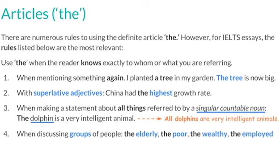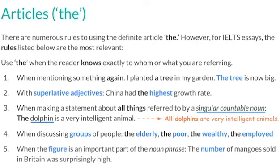We also use 'the' when we're talking about certain groups of people — for example, the elderly, the poor, the wealthy, the employed, and so on. Finally, we use 'the' if the figure is an important part of a noun phrase. For example: 'The number of mangoes sold in Britain was surprisingly high.' In this case, 'number of mangoes' is the noun phrase, so we have to use the word 'the'.